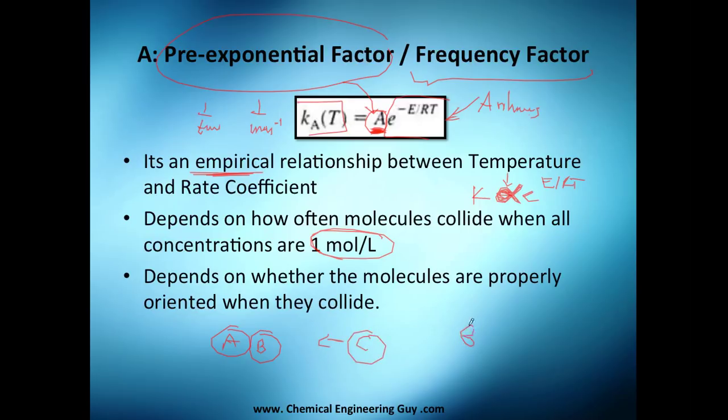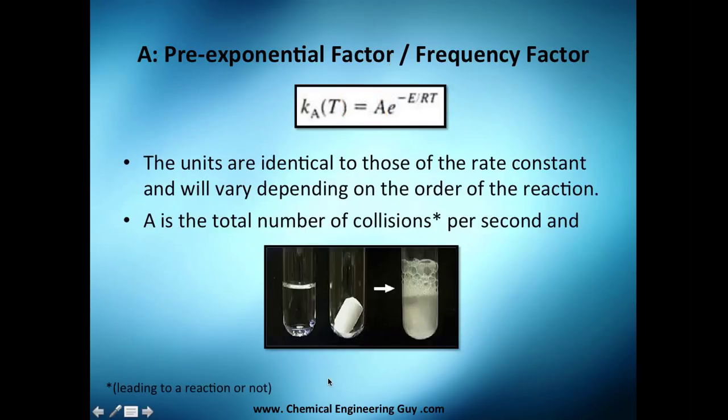our final product is B with C. Well of course C needs to collide with the side of B. If you find out that C is colliding with A, you are going to have no reaction. If you actually collided with B, you're going to have a new reaction. So that's the pre-exponential factor frequency.